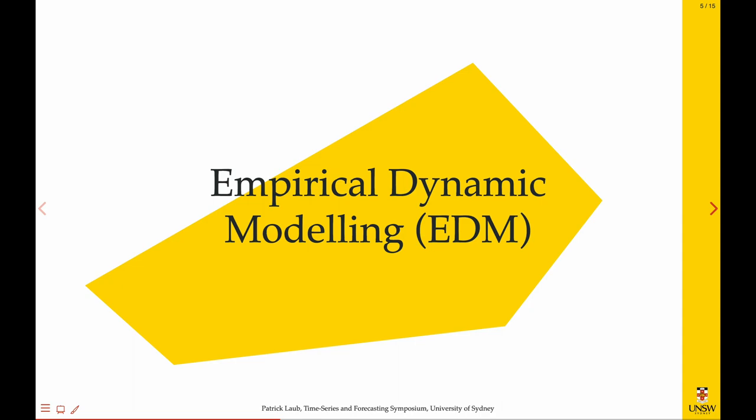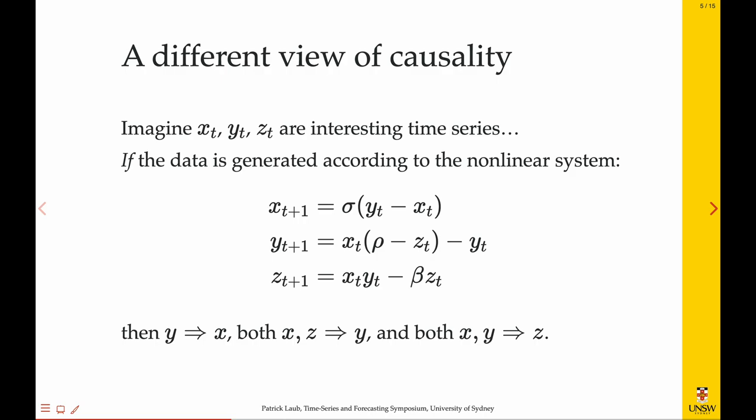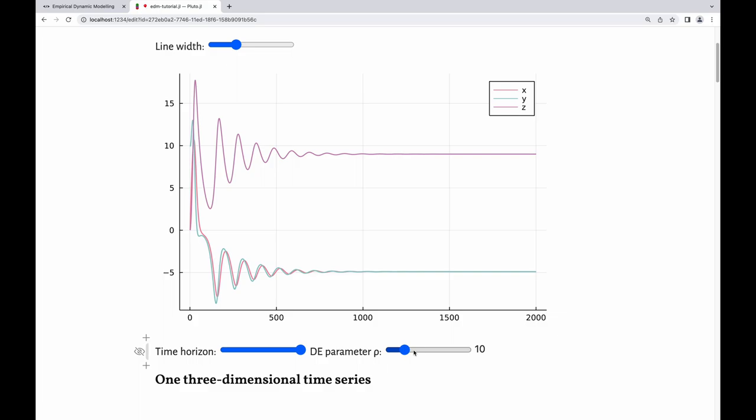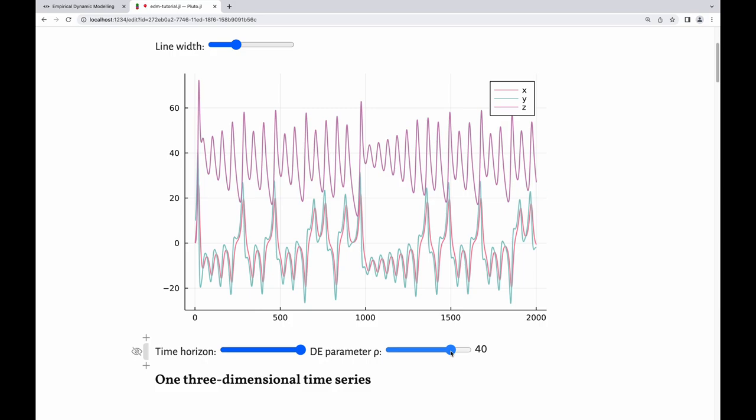Unfortunately, a lot of the time our systems have lots of dimensions. We only observe a few of them. We don't observe the whole system, which is where Takens' theorem comes into play, which I have a demo or two about. So imagine these are this X, Y, and Z that I just showed you, and they're just plotted as three different time series here. I'll change the parameter to make it more chaotic, more interesting.